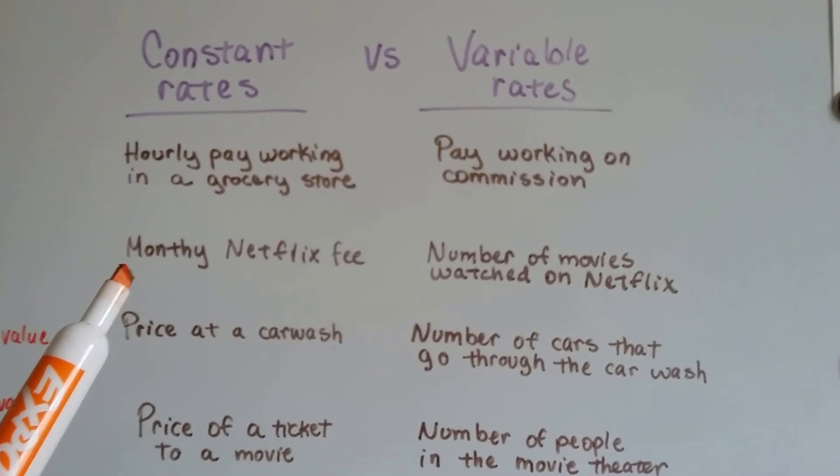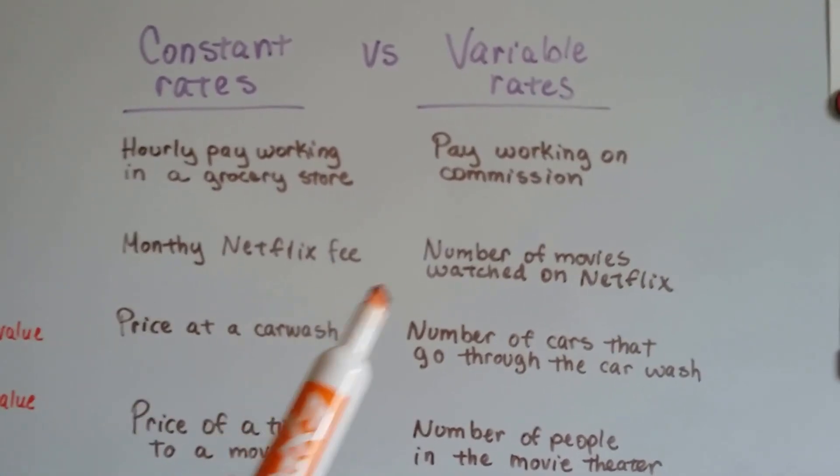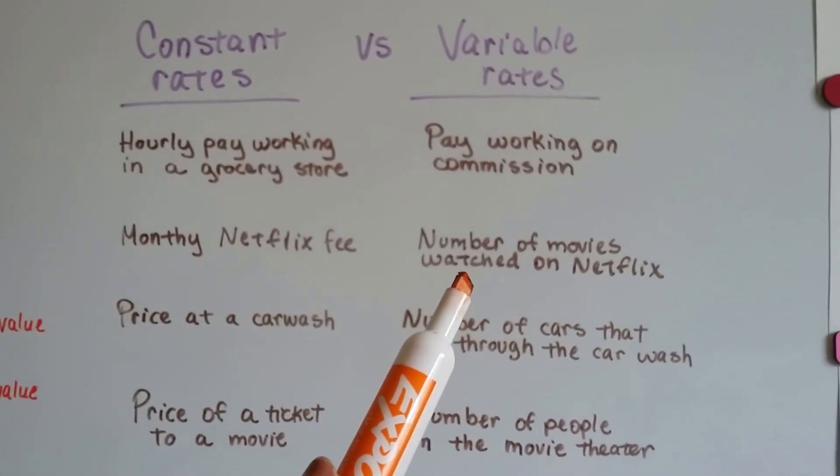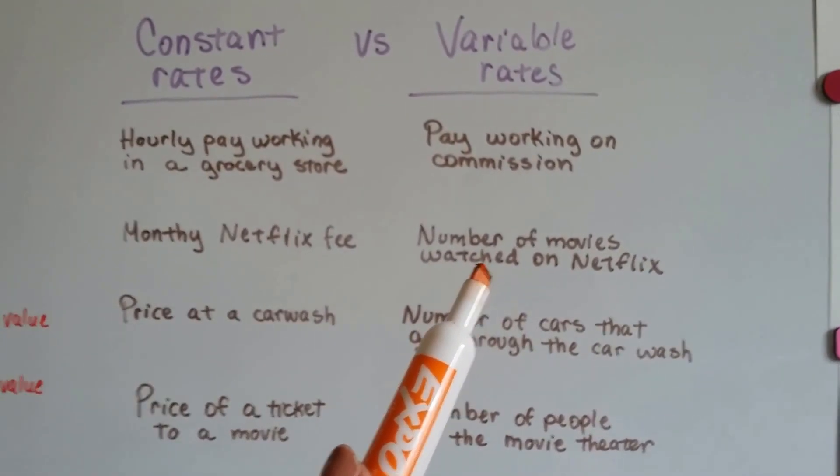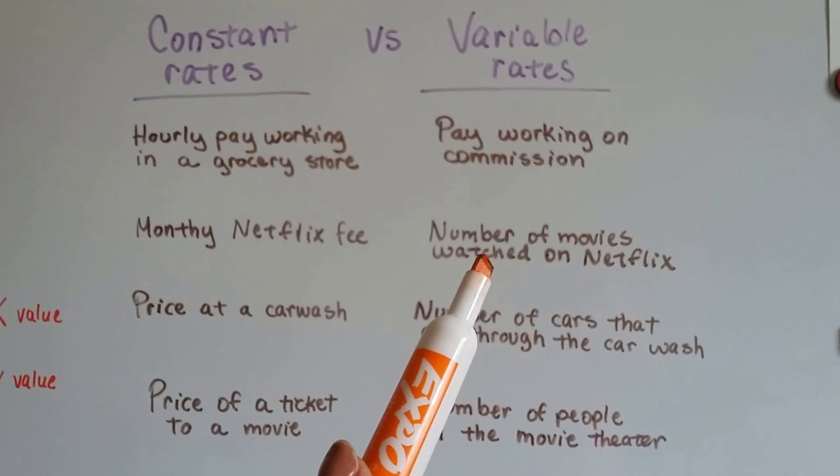A constant rate would be your monthly Netflix fee. The variable rate would be the number of movies you watched on Netflix. You're not going to watch exactly the same number of things on Netflix every single month. It's going to vary.